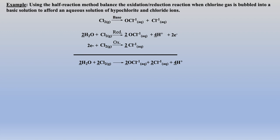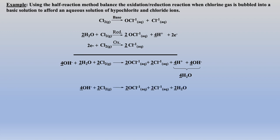Up to this point, all the steps were the same as in acid. But since we are in base, we add hydroxyl groups to neutralize the protons. In this example, there are 4 protons on the product side, so I add 4 hydroxyl groups to the product side, and also 4 to the reactants side. This forms 4 water molecules on the product side, with 2 water molecules on the reactants side simplifying out. Finally, we check that all atoms and charges are balanced in the equation.